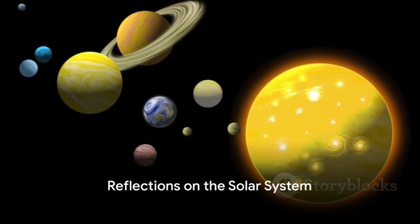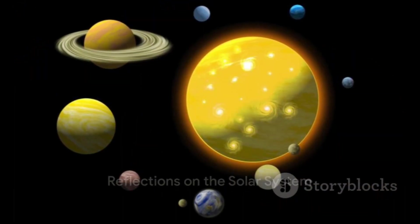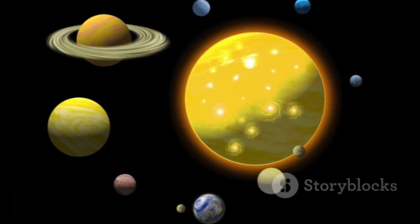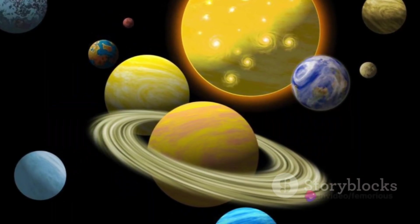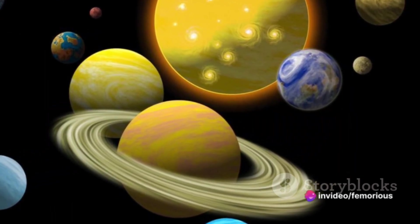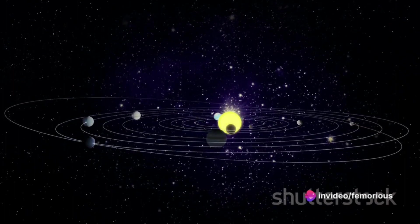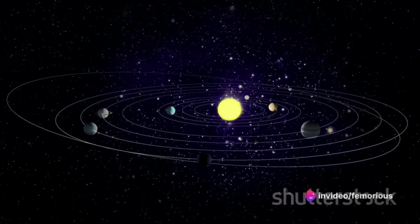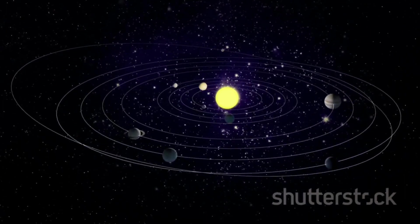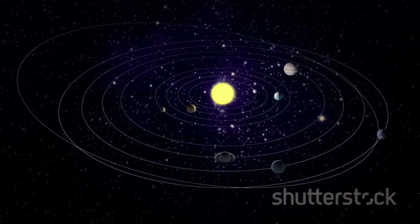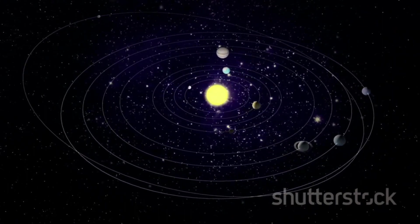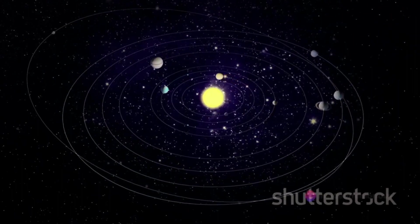The hypothetical ejection of Mercury serves as a stark reminder of the dynamic nature of our solar system. While the loss of a planet might seem like a major event, the vastness of space ensures that even such occurrences wouldn't fundamentally alter our existence. However, it prompts us to ponder the delicate balance at play and the intricate dance of gravity that keeps our celestial neighborhood in check.